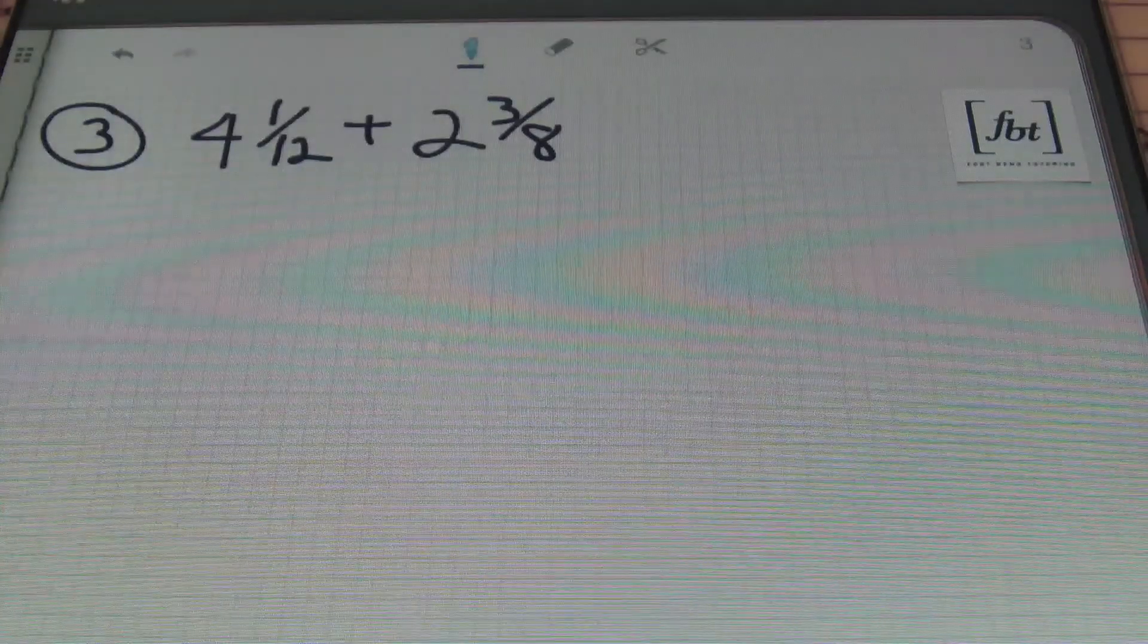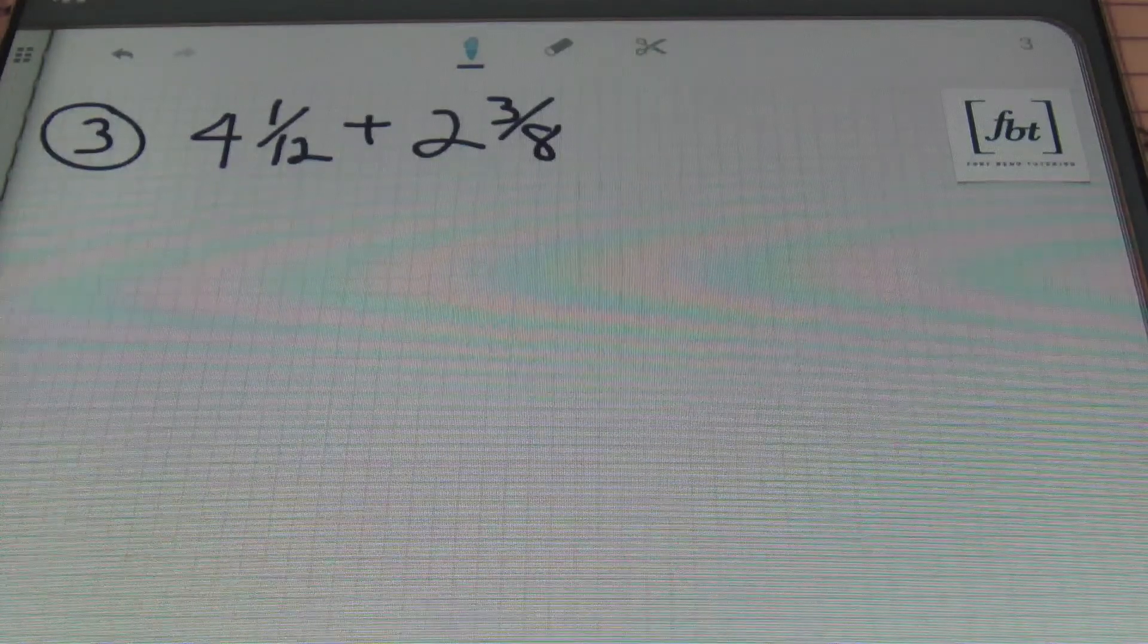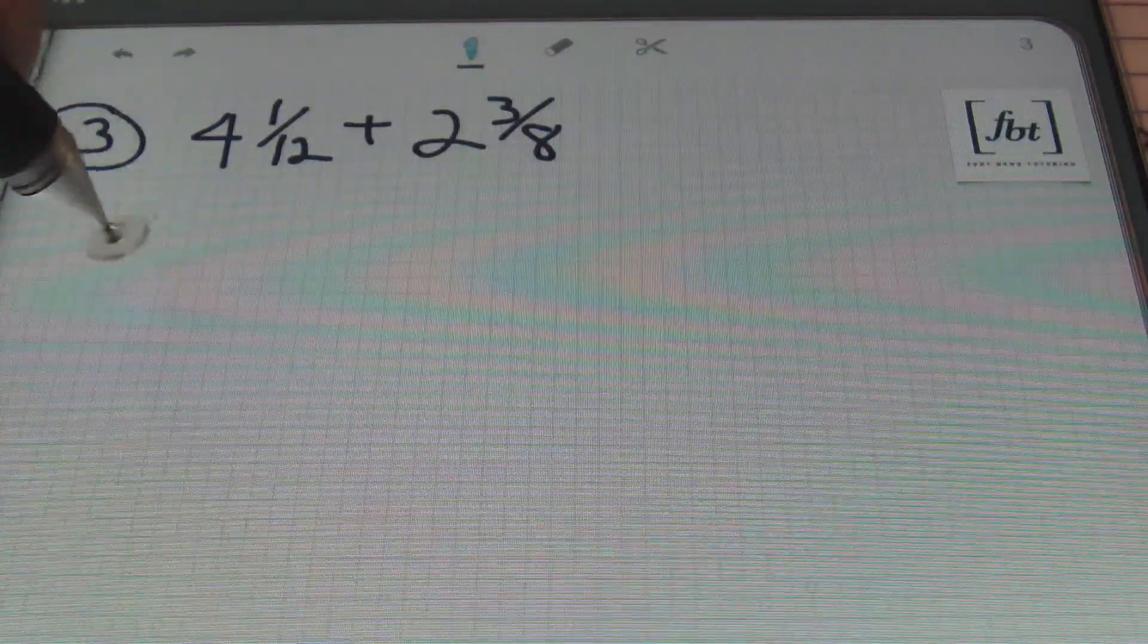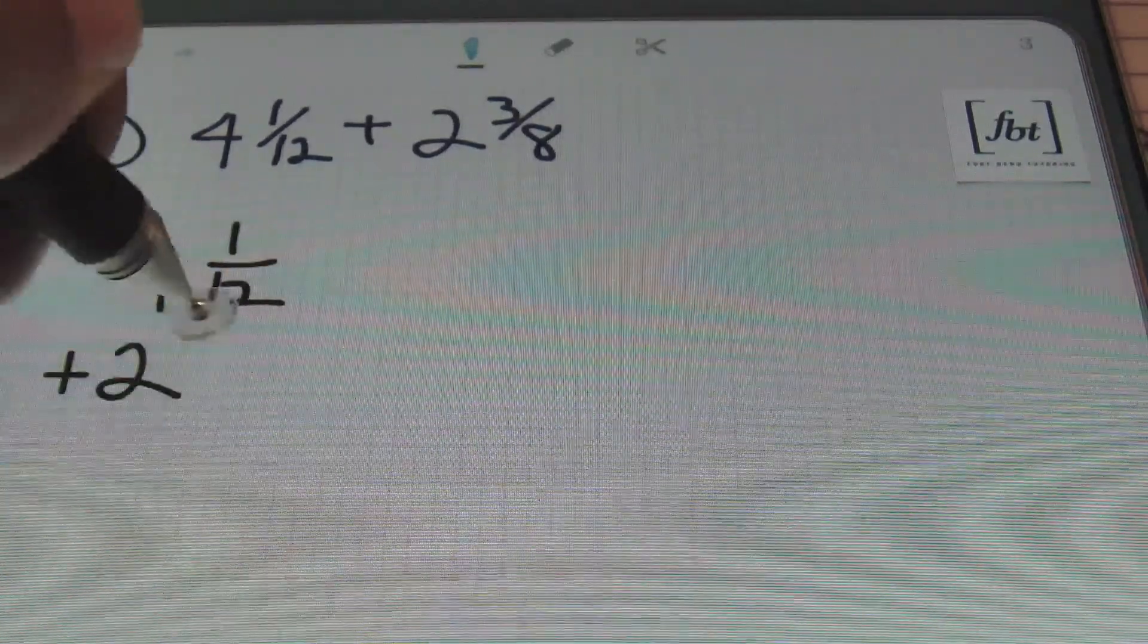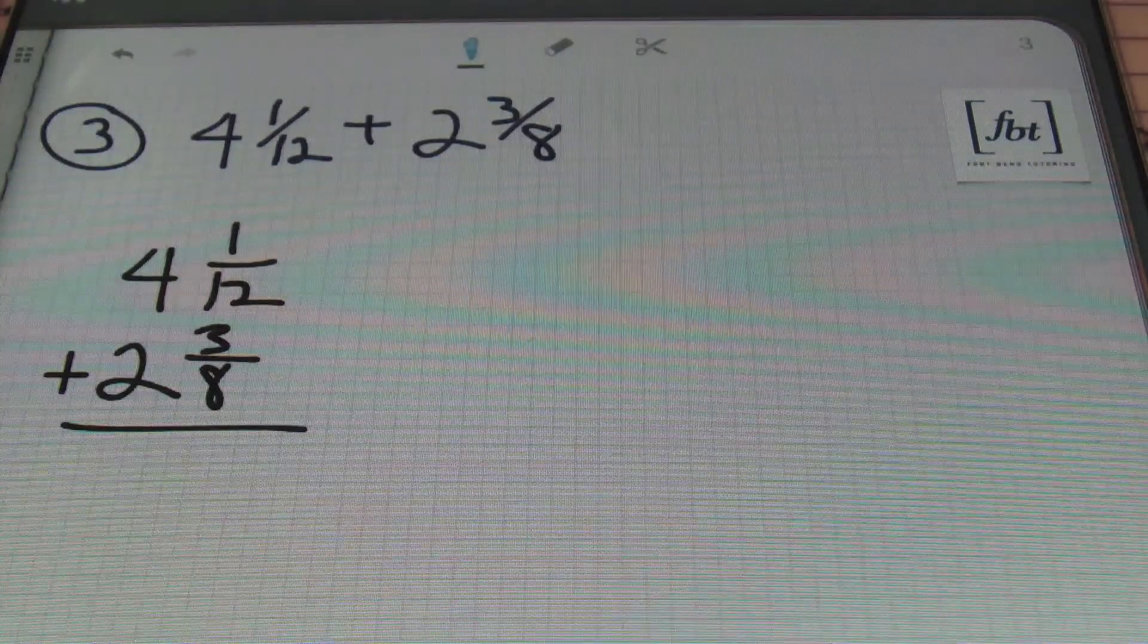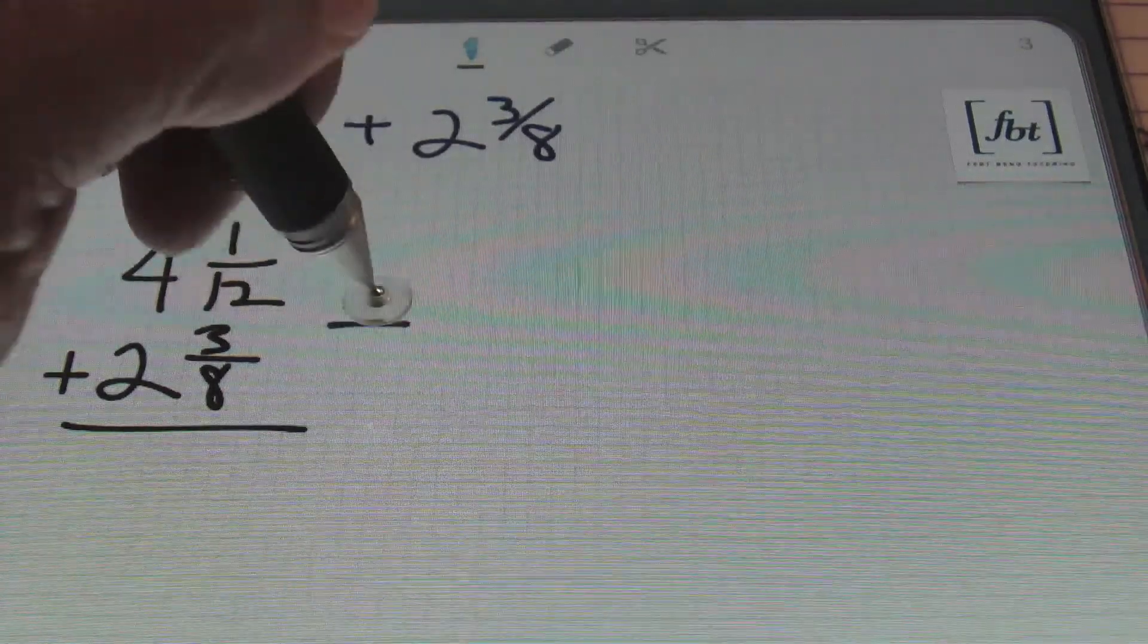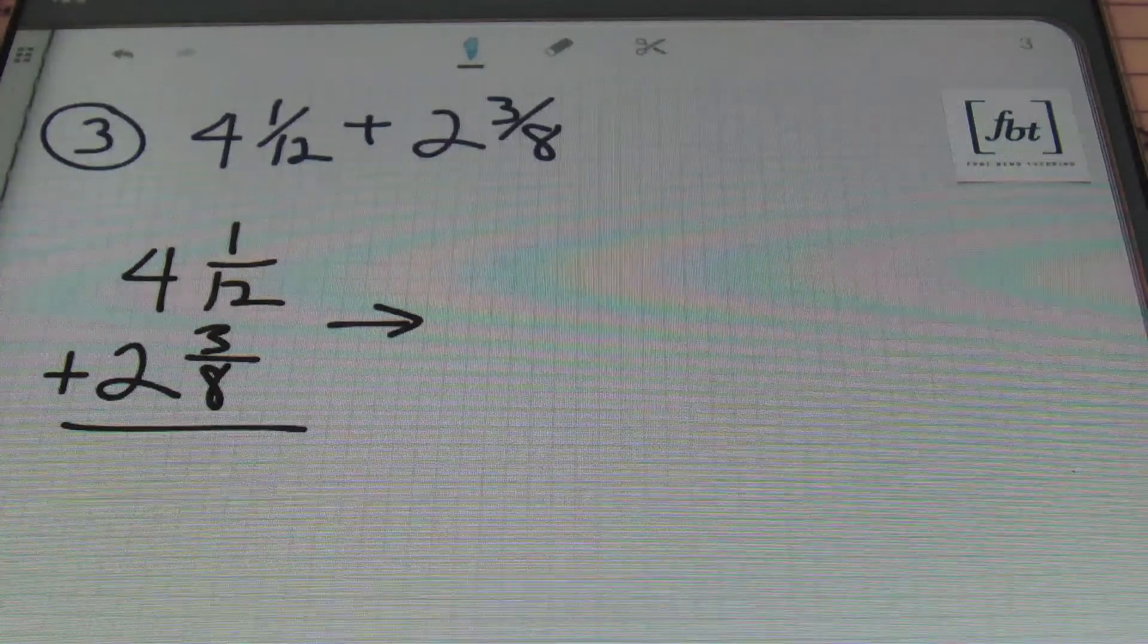Next up. In problem number 3 we have 4 and 1/12 plus 2 and 3/8. So what I want to do in this problem ladies and gentlemen is first of all I want to write it vertically. So I'm going to rewrite this as 4 and 1/12 plus 2 and 3/8. I'll need to be concerned about the denominators of my fractions because they're not the same. So in order to get the same denominator I need to look for the lowest common denominator. The first number that 8 and 12 will go into evenly.